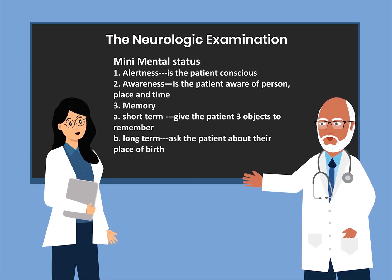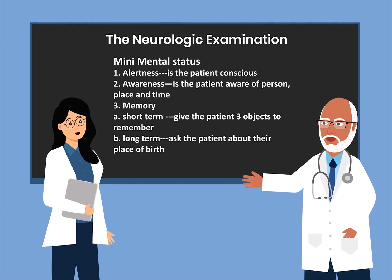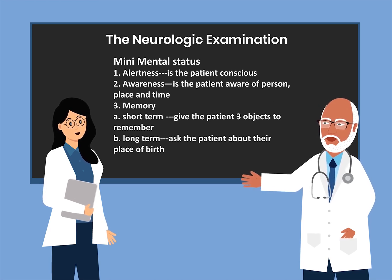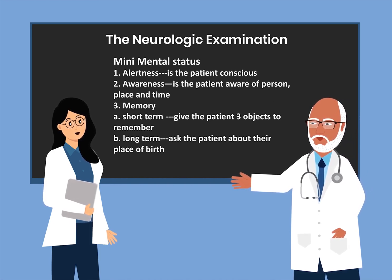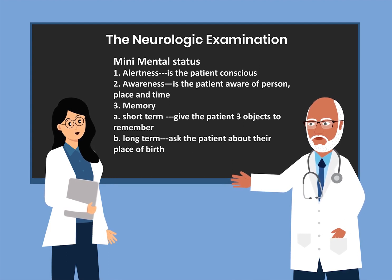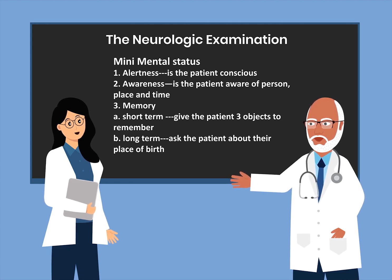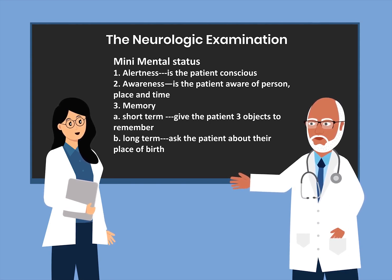The mini mental status exam includes alertness, awareness, memory, speech, judgment, and affect. In terms of alertness, the patient should be conscious. Alertness is a brainstem function — the reticular activating system is responsible for alertness. Awareness means the patient should be aware regarding person, place, and time; the cortex is responsible for awareness. We can ask the patient about who is the president, where they are located, and what time it is. This gives us the expression that the patient is alert and oriented times three.